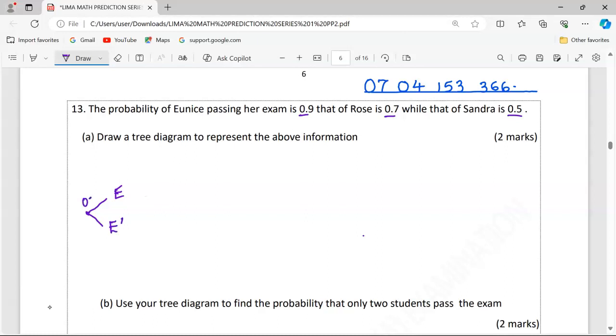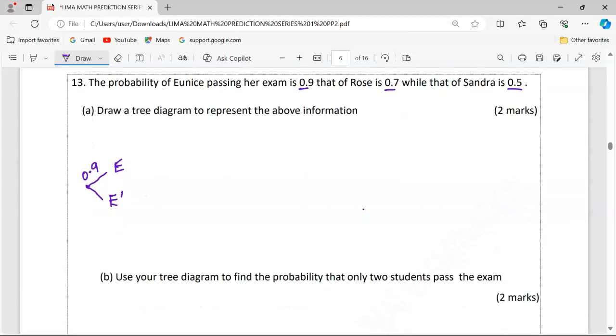Eunice pass is 0.9. The probability of two mutually exclusive events must add up to one. That is, automatically Eunice fail becomes 0.1.